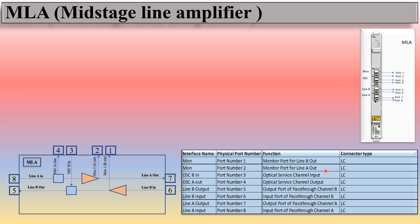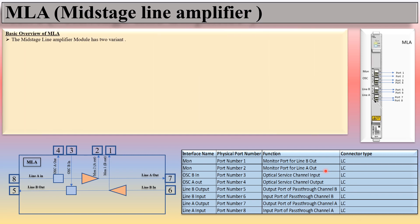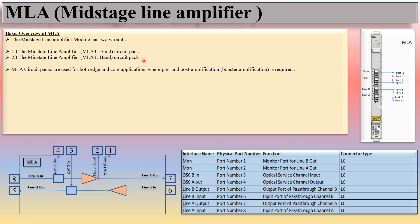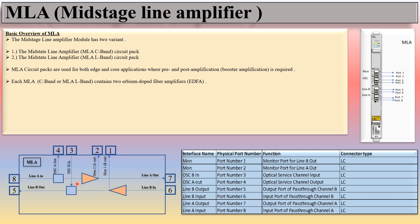All ports use LC connector type. The MLA mid-stage line amplifier module has two variants: the MLA C-band circuit pack and the MLA L-band circuit pack. MLA circuit packs are used for both edge and core applications where pre- and post-amplification (booster amplification) is required — in both directions, Line A and Line B. Each MLA C-band or MLA L-band contains two EDFAs: one in pre-amplifier configuration and the other in post-amplifier configuration.